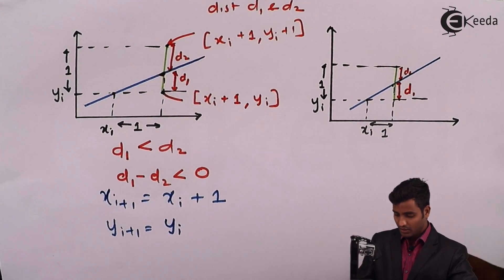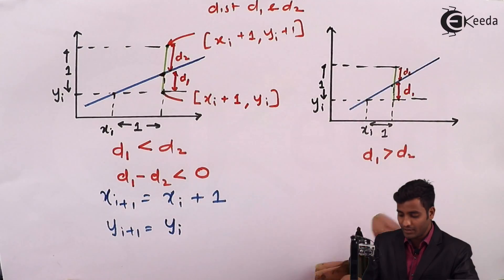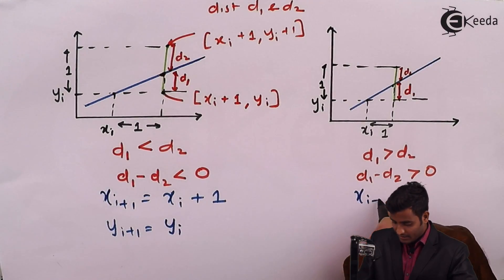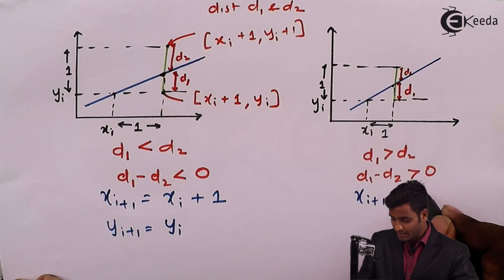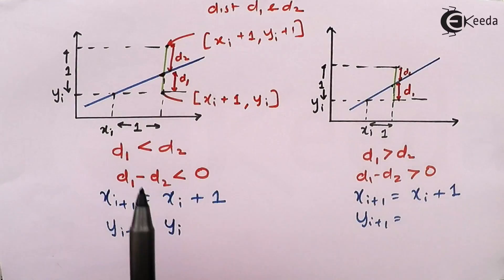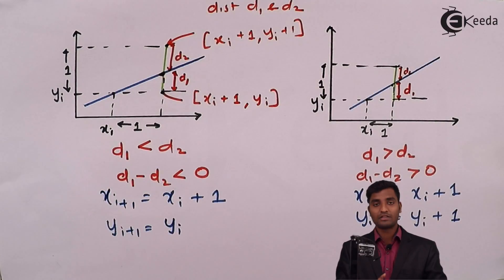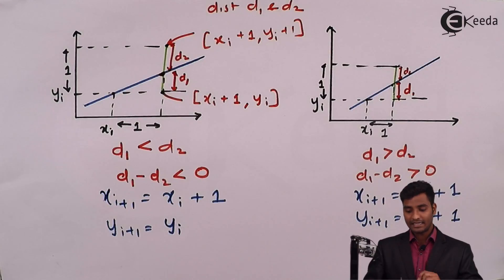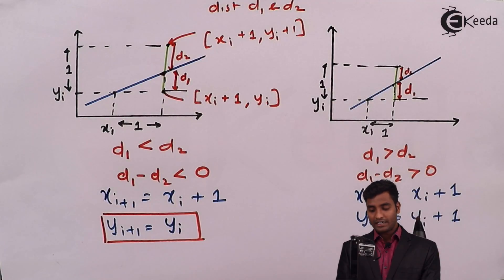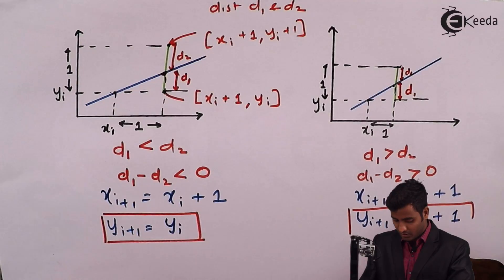Similarly, for the second figure, here d1 is greater than d2, so d1 minus d2 is greater than 0. Here the x coordinate remains unchanged, so xi+1 becomes xi+1, and for yi+1 we take the coordinate of d2, which is yi+1. So two conditions exist: if d1 is less than d2, yi+1 equals yi; and for d1 greater than d2, yi+1 equals yi+1.